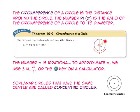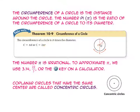The circumference of a circle is the distance around the circle. The number PI is the ratio of the circumference of the circle to its diameter. To find the circumference of a circle, we will use the formula: circumference equals PI times the diameter, or circumference equals 2 times PI times the radius. Remember, the radius is half the distance of the diameter. The number PI is irrational. To approximate PI, we use 3.14, 22 over 7, or the PI key on the calculator.